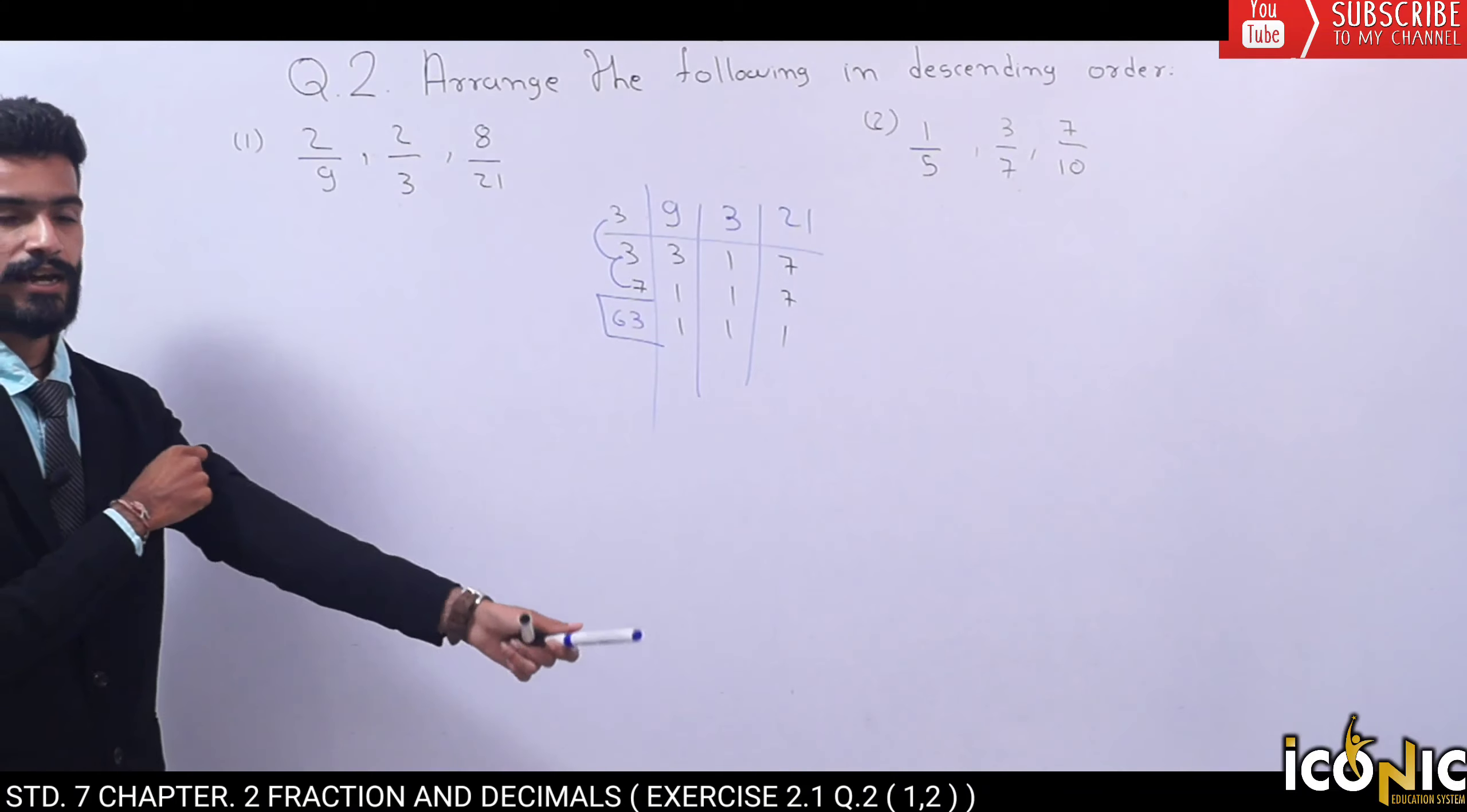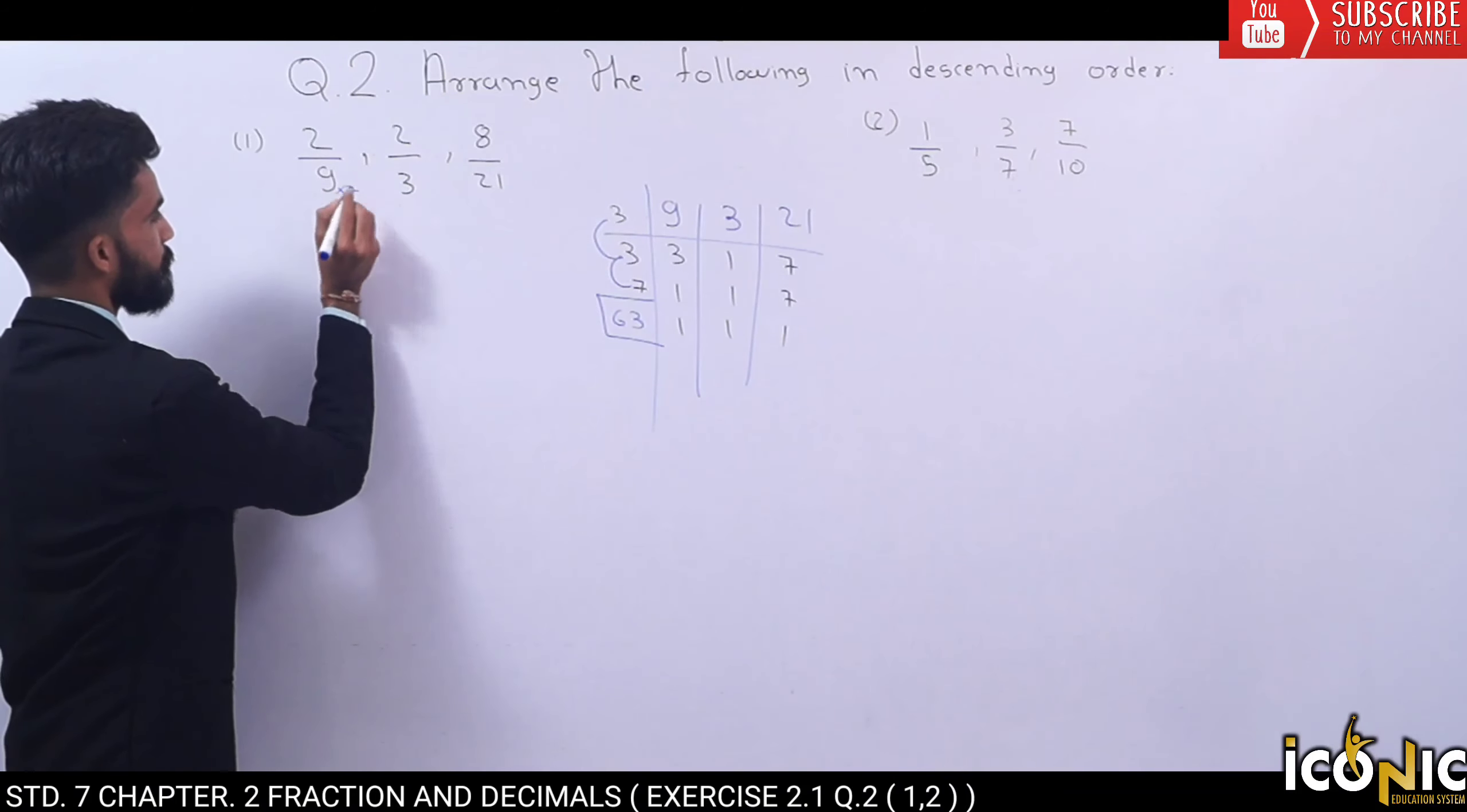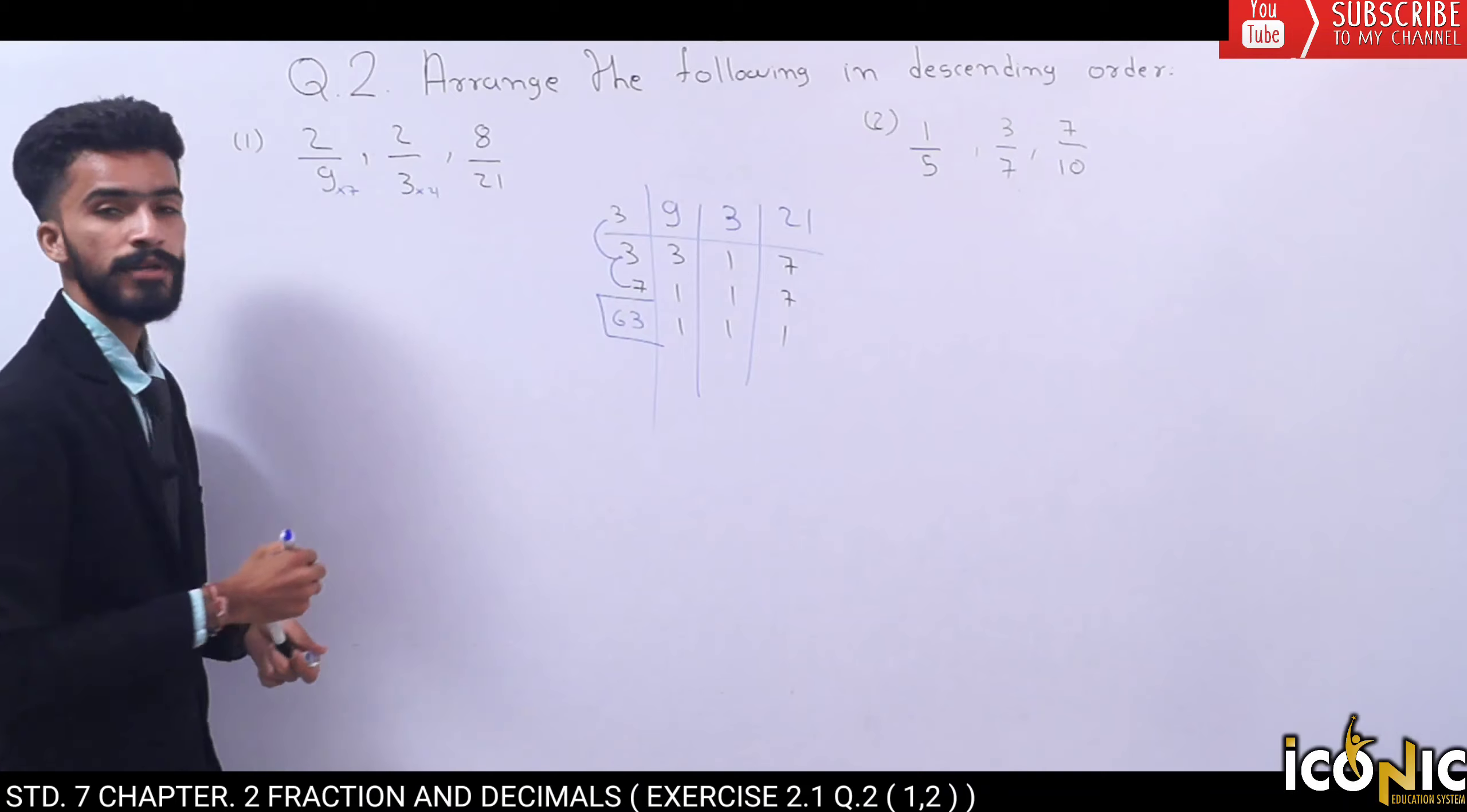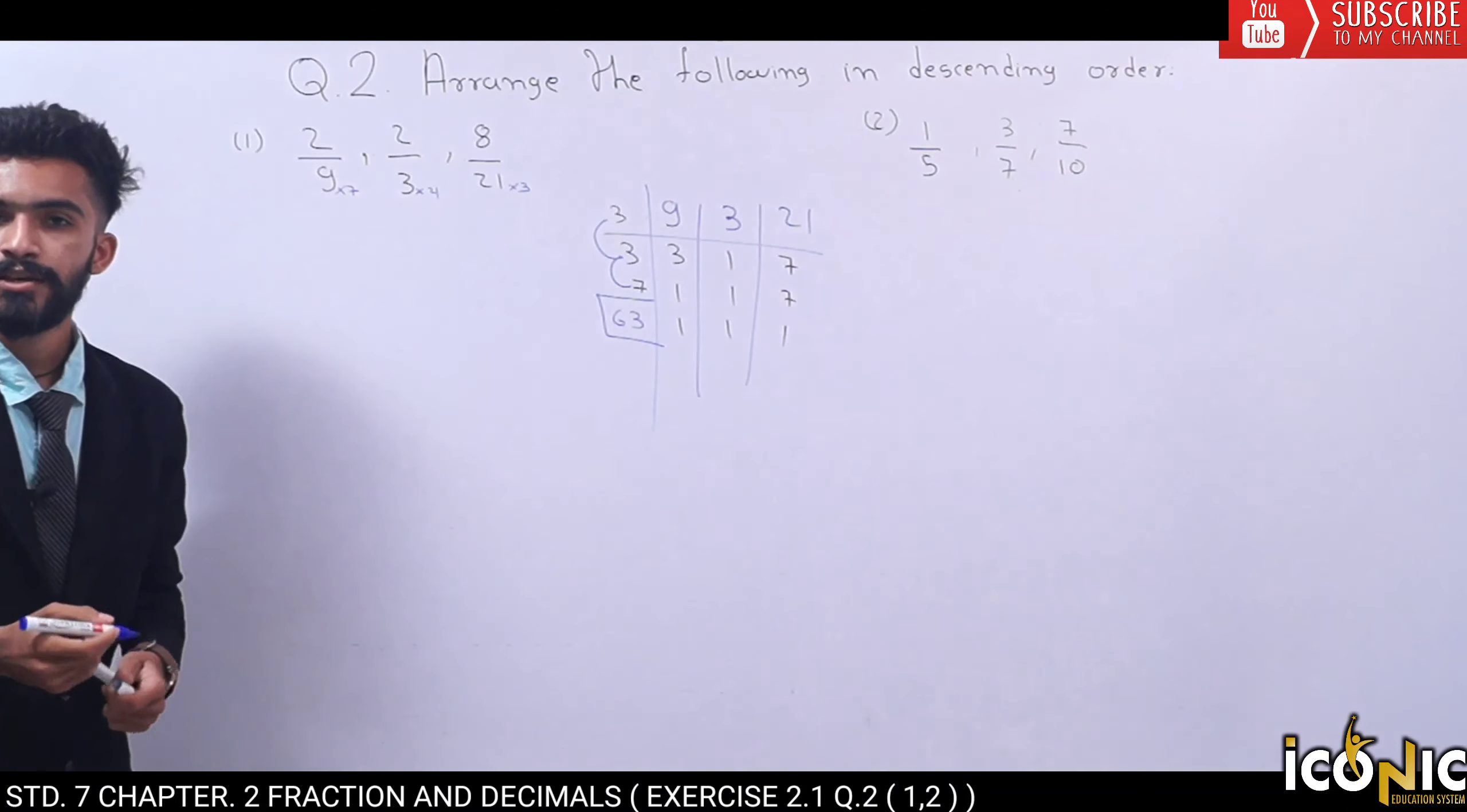So we will make this 63 and this 63. Let's go. 9 to 63 is times 7. 3 to 63 is times 21. 21 to 63 is times 3.